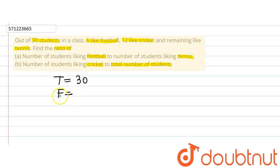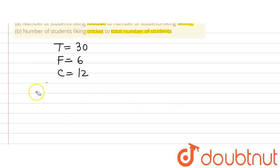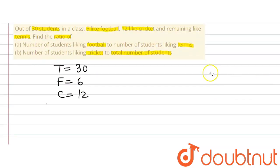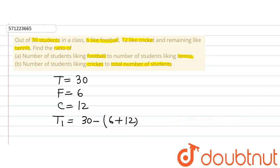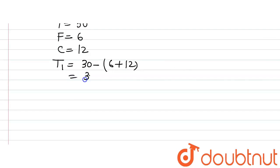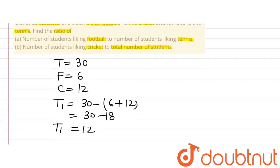The number of students who like football, let's denote them by F, is 6. Number of students who like cricket, let's denote them by C, is 12. The remaining like tennis, so let's denote students who like tennis by T1. T1 is equal to total number of students minus the number of students who like football and cricket, so 30 minus 18 equals 12.